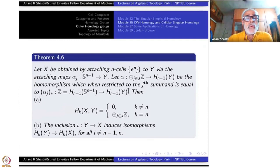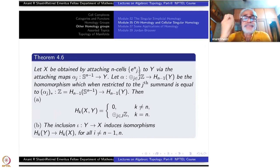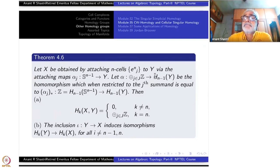This alpha is going to play a role in the homology of X. Statement A: the relative homology H_K(X, Y) is 0 except at K equal to N. At K equal to N, it is a direct sum of copies of Z — as many as the indexing set J. Statement B: the inclusion map from Y to X, when passed to homology, is an isomorphism for all K not equal to N minus 1 and N. At N minus 1 and N, there is some disturbance because of the attaching cells.